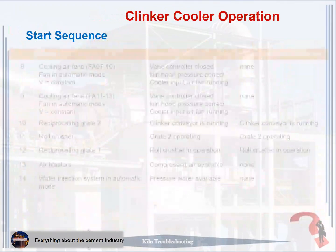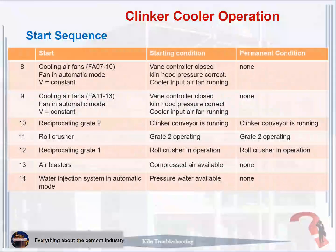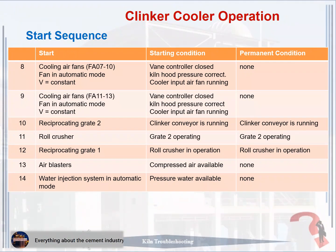Step 8: Start cooling air fans FA07-10, fan in automatic mode, V equals constant. Starting condition: vane controller closed, kiln hood pressure correct, cooler input air. Permanent condition: none. Step 9: Start cooling air fans FA11-13, fan in automatic mode, V equals constant. Starting condition: vane controller closed, kiln hood pressure correct, cooler input air fan running. Permanent condition: none.